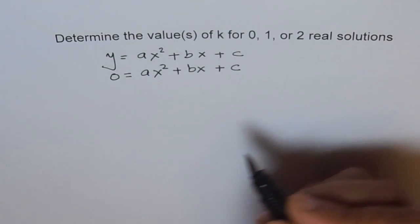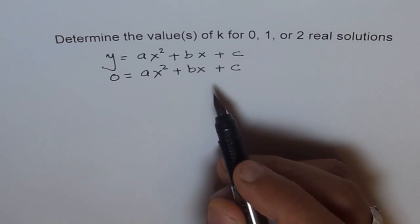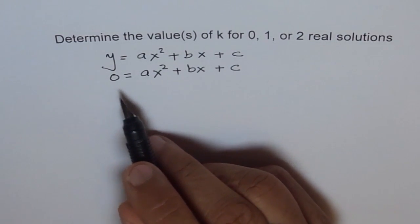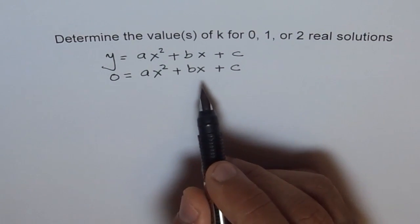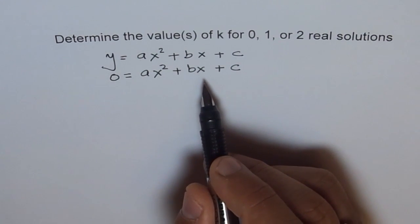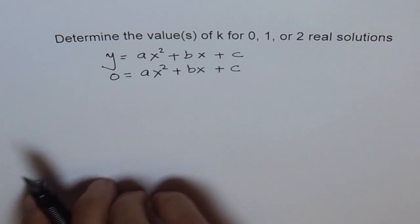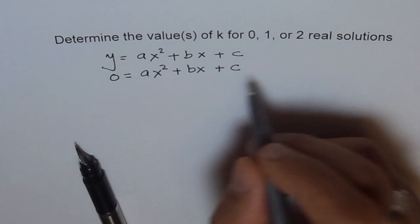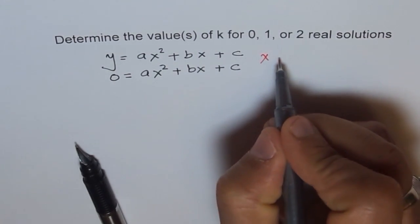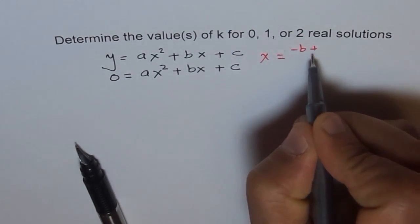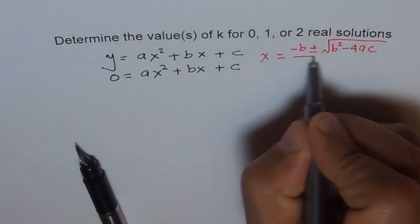Whenever we say find solutions of this quadratic function or quadratic equation, we really mean that if y equals 0, or f(x) equals 0, then what is the value of x? When you solve for this kind of equation, you may get no value of x, just one value of x, or two values of x, depending on the discriminant part. The formula gives x equals negative b plus or minus square root of b squared minus 4ac over 2a.